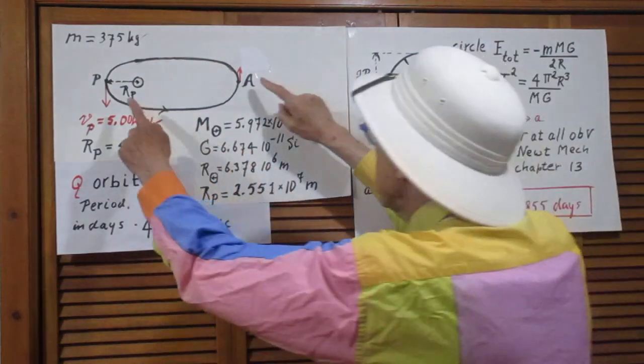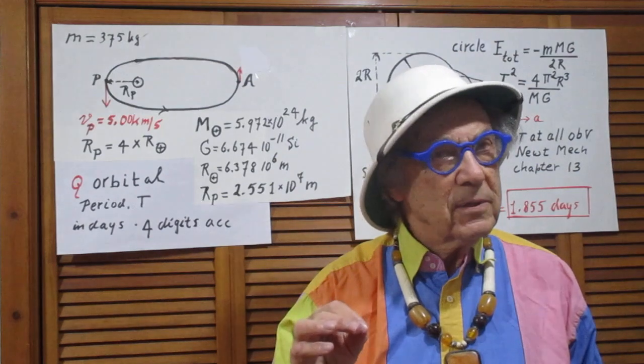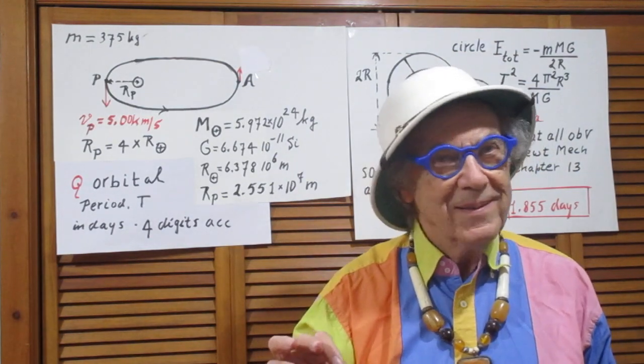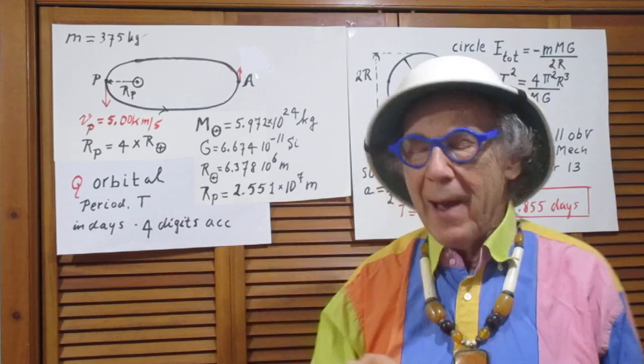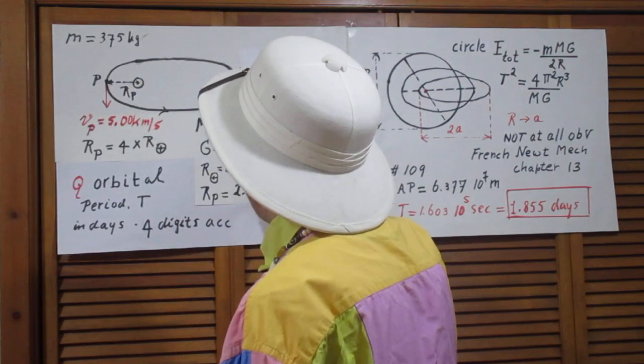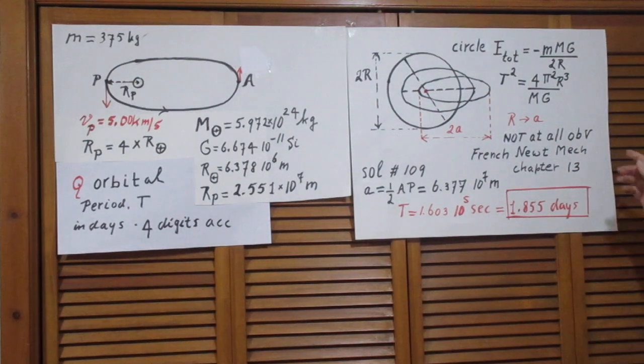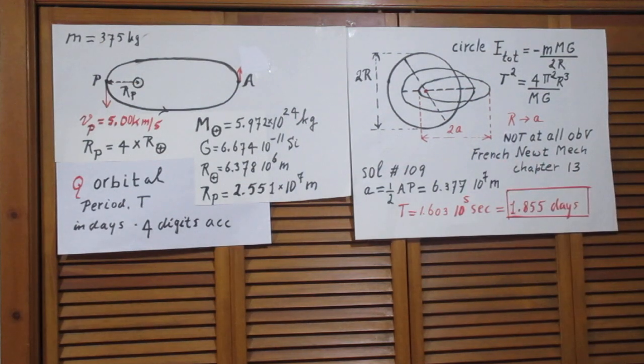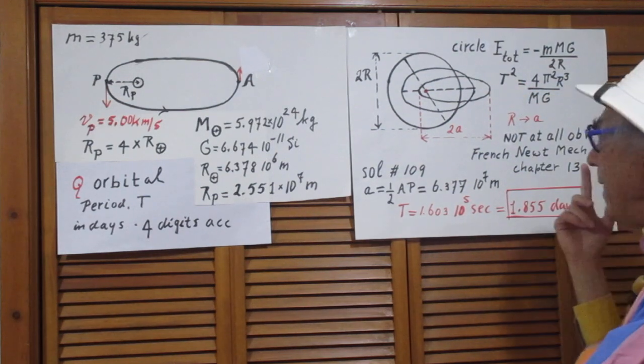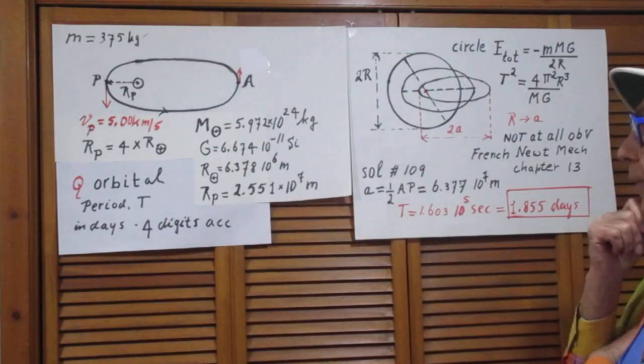A is half the distance AP. It is called the semi-major axis. Major axis would be 2A. Semi-major axis is A. So from here to here is 2A. Half of that is A. So if you put the A in that equation, out pops immediately the t. So the only question remains then, what is A for this ellipse?